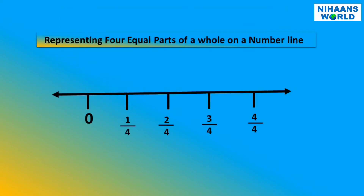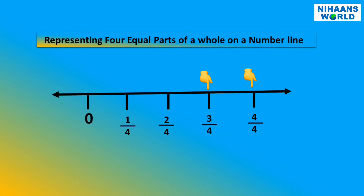Let's see how four equal parts of a whole are represented on a number line. Zero to one fourth is one part of a whole. One fourth to two fourth is the second part of a whole. Two fourth to three fourth is the third part of a whole. Three fourth to four fourth is the fourth and last part of a whole.